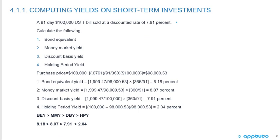This is an important consolidator slide. We're going to calculate the bond equivalent yield, money market yield, discount basis yield, and holding period yield for a 91-day, $100,000 U.S. T-bill sold at a discount rate of 7.91%. The first thing we need is the purchase price: 100,000 minus 0.0791 times (91/360) times 100,000, giving a purchase price of 98,000.53. The discount interest is $1,999.47.